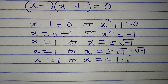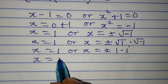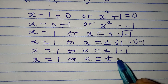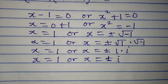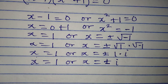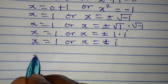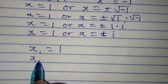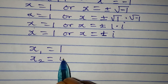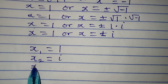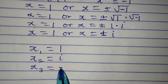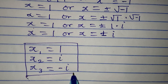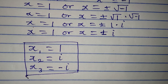So from here, x is equal to positive or negative 1 times i, which gives us i. Now let's bring the three solutions together: x₁ is equal to 1, x₂ is equal to positive i, and x₃ is equal to negative i. So these are the three solutions that will satisfy the equation. Thank you for watching.